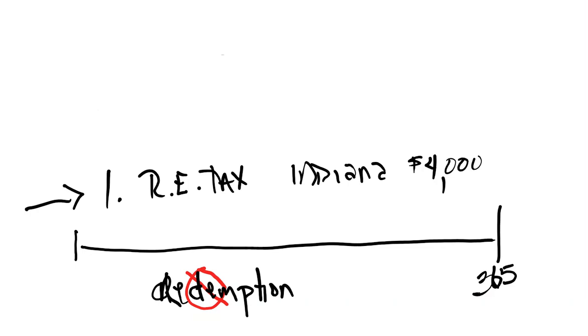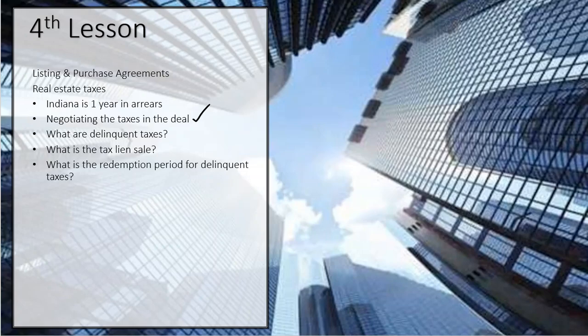And ta-da! Now the person would get it over here for their real estate tax, whatever they paid. So that's how the tax lien auction works. There is a redemption period for one year.